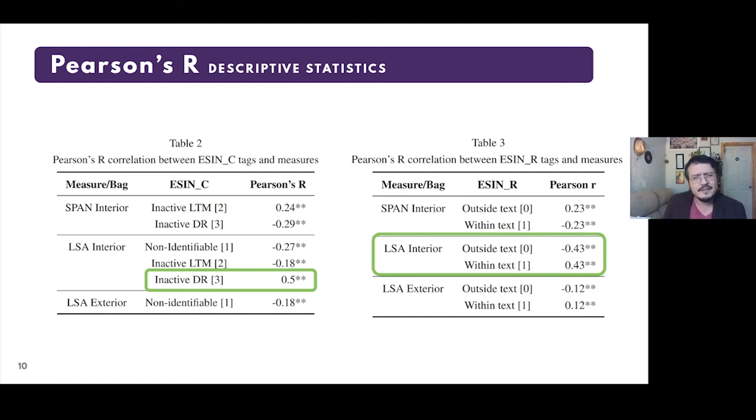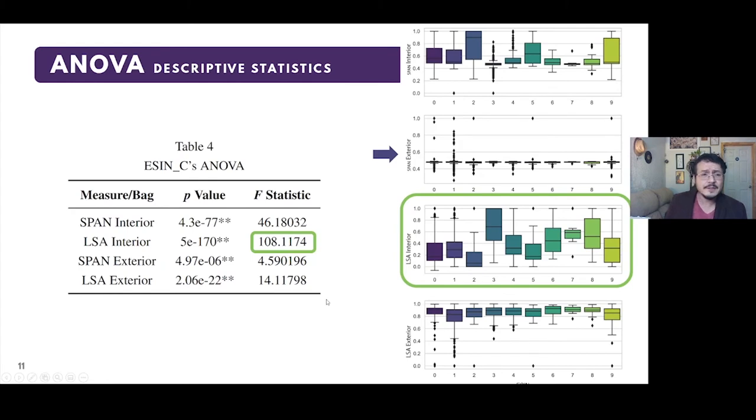To determine that the groupings of the noun phrases using the measures and the tags offers differentiated sets, a variance analysis was carried out. In the case of CINSE C, the results are shown in Table 4. As can be seen, the highest statistic is obtained for LSA interior, and the lowest for SPAN exterior. This makes sense with the correlations found, where the measures using the exterior bags did not show a strong correlation with the labels. If we carry out a more detailed inspection through box plots, we observe that there is no label well differentiated from another. However, it is precisely the LSA measure with the interior bag that shows the greatest contrast.